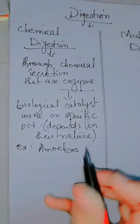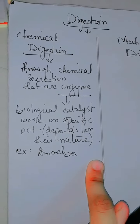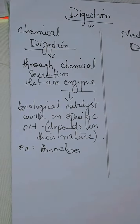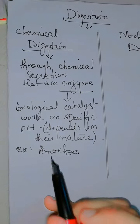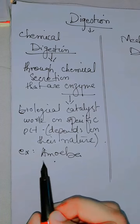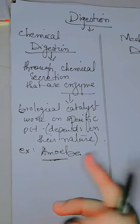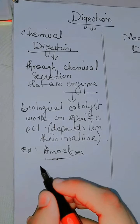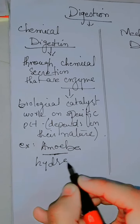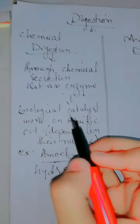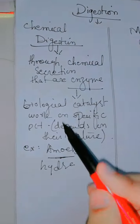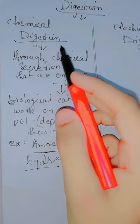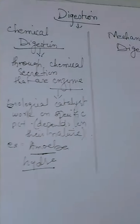For example, amoeba has chemical digestion — it has hydrolytic enzymes that help in digestion. Similarly, hydra also has chemical digestion, as it secretes enzymes for digestion.